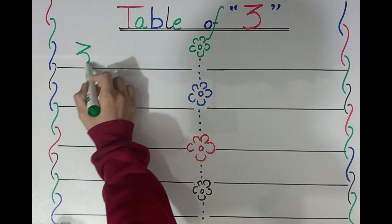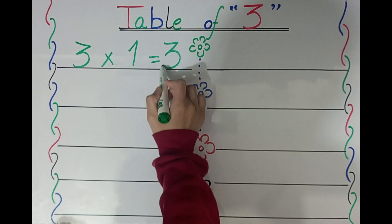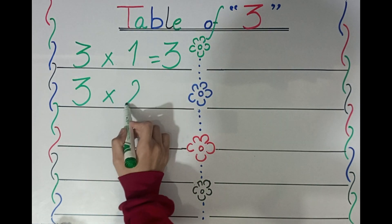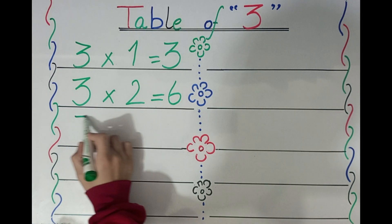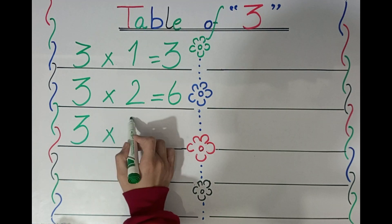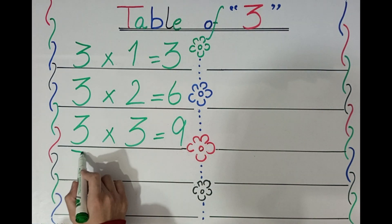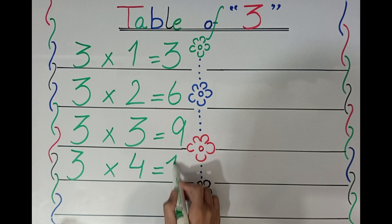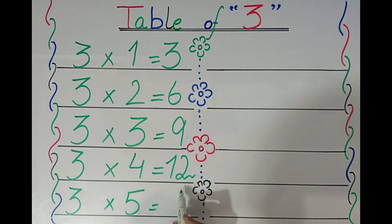Three. Three ones are three. Three twos are six. Three threes are nine. Three fours are twelve. Three fives are fifteen.